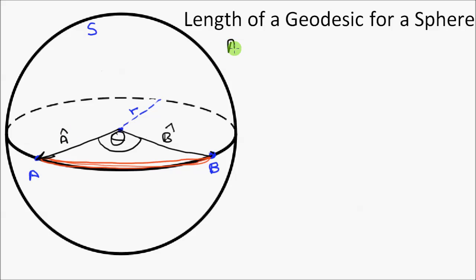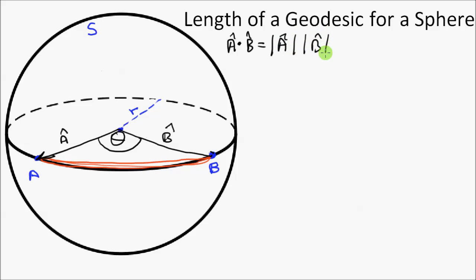The vector dot product, written as vector A dot vector B, equals the magnitude of vector A multiplied by the magnitude of vector B multiplied by the cosine of the central angle theta.